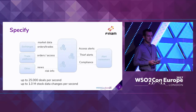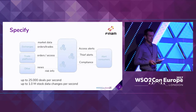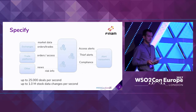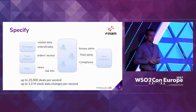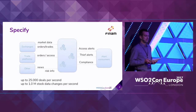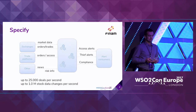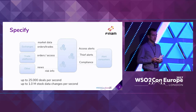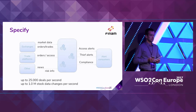We have several basic data sources: from exchanges, from trade platforms, and other data sources. From exchanges, we get information about market data, orders, and trades. From trade platforms, we get information about client events such as access and orders. From other systems, we get information about any other events such as news. We have up to 1 million stock data changes per second and up to 25,000 events per second.